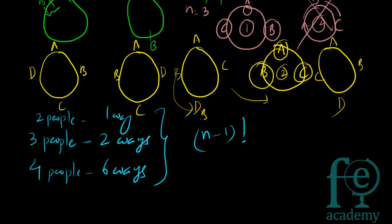The formula for arranging n people in a circle is (n−1) factorial. Check: 3 people → (3−1)! = 2! = 2. Four people → (4−1)! = 3! = 6. So n people can be arranged in a circle in (n−1)! ways. Be thorough with this formula — keeping it in mind, we will now solve the question.